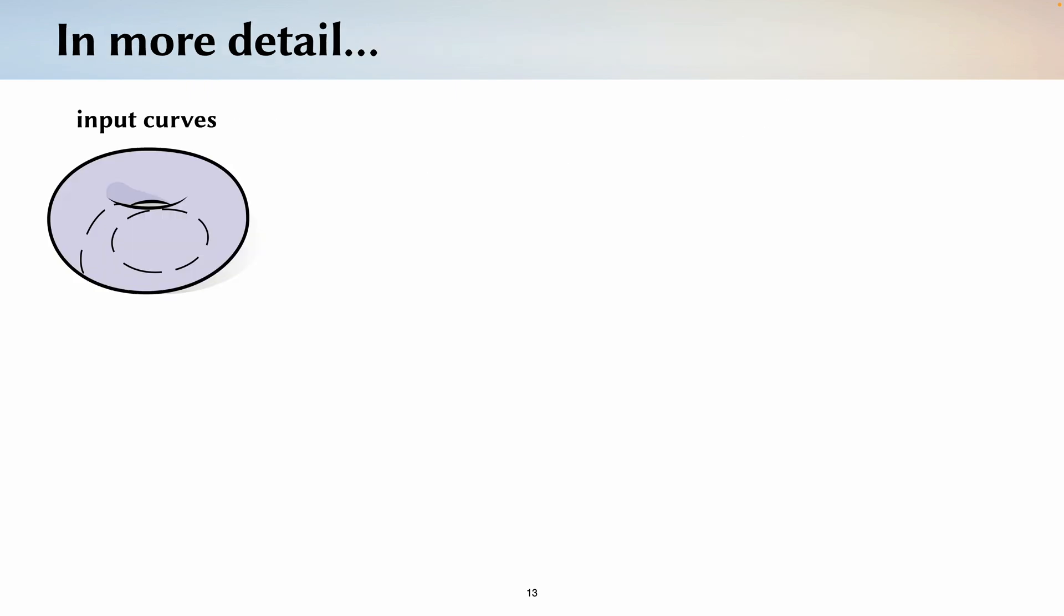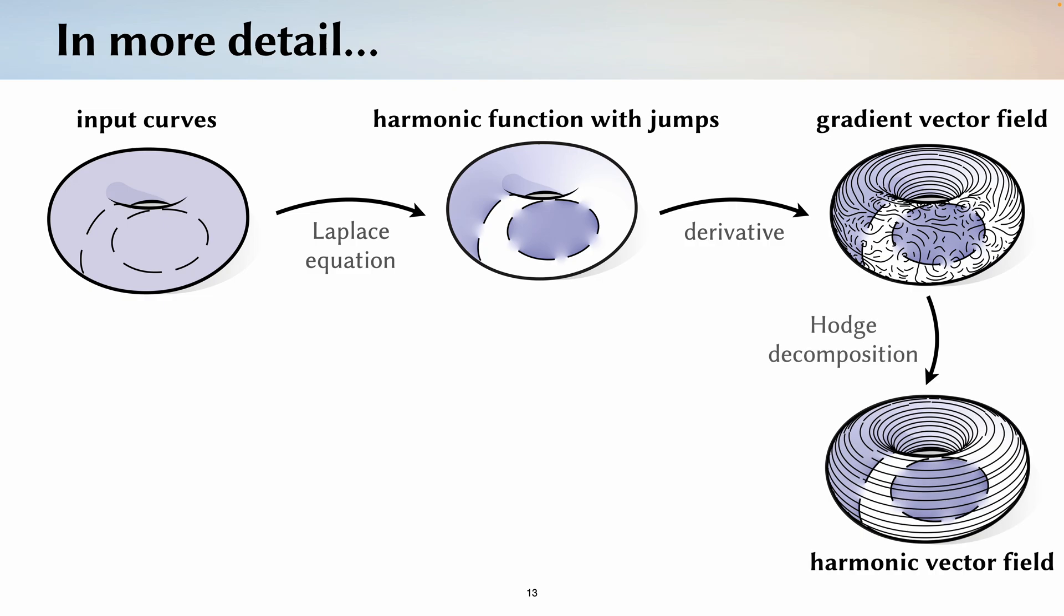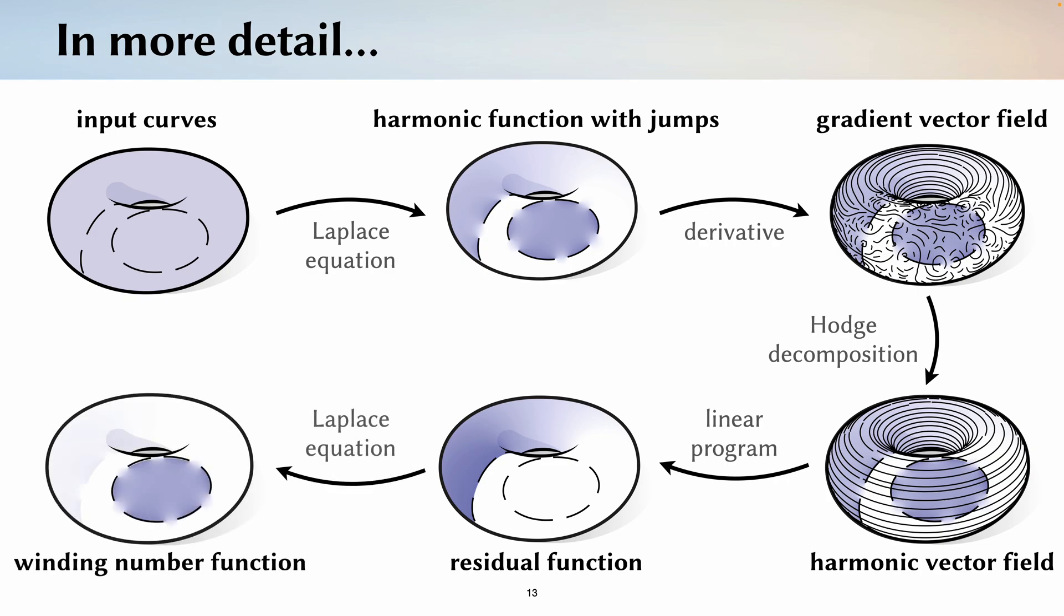In more detail, we start by solving a Laplace equation to get a harmonic function with jumps that roughly corresponds to the winding number in the plane. However, this doesn't give us a winding number function due to the influence of non-bounding curves, so we instead look at the derivative of this function, which forms a gradient vector field. Once we've turned our curves into this vector field, we can now apply a known tool and do Hodge decomposition to get the harmonic part of this vector field. We then map this vector field decomposition to a residual function that identifies the non-bounding parts of our curve. And then we solve a final Laplace equation to get our final winding number function.